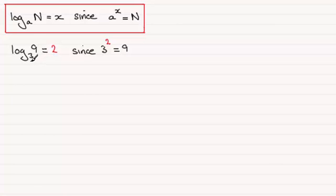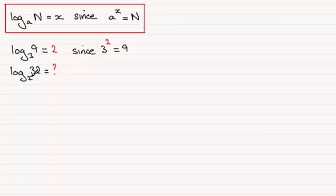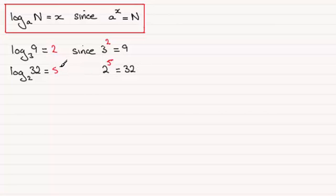You can say 'log 9 in base 3' or 'log in base 3 of 9' — it's up to you. Let's try another one: the log of 32 in base 2. Remember, we're looking at the base which is 2, so it's going to be 2 to the power something equals 32. Hopefully you spotted that it's 5 — 2 to the power 5 gives us 32. So the log of 32 in base 2 is 5.